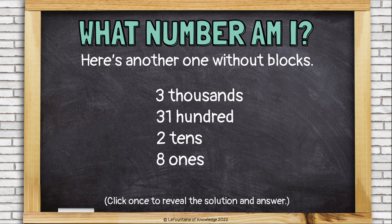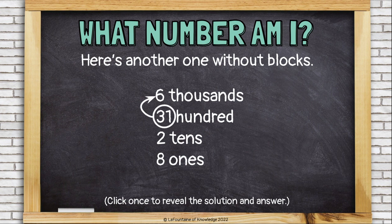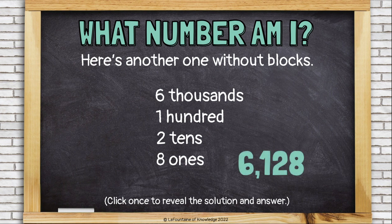Here's another. This time I have 3 thousands, 31 hundreds, 2 tens, and 8 ones. I can't put a 31 in the hundreds place. I have 30 hundreds that I need to turn into 3 more thousands. Each group of 10 hundreds is worth a thousand, and I have 3 groups of 10 hundreds, or 30 hundreds. So let's add 3 more to my thousands — I had 3 thousands, now I have 6 thousands. I got rid of 30 hundreds, and that only leaves 1 hundred left. I can see my answer: 6,128.